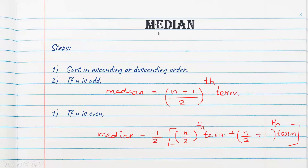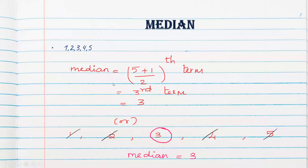Let us now try to understand about median. What is meant by median? Median is nothing but the middlemost term. How to find the middlemost term? Step 1: sort the data in ascending or descending order. If the number of observations is odd, then median equals the (n+1)/2 th term. If the number of observations is even, then median equals the average of the n/2 th term and the (n/2 + 1)th term. Let us solve a problem to understand it better.